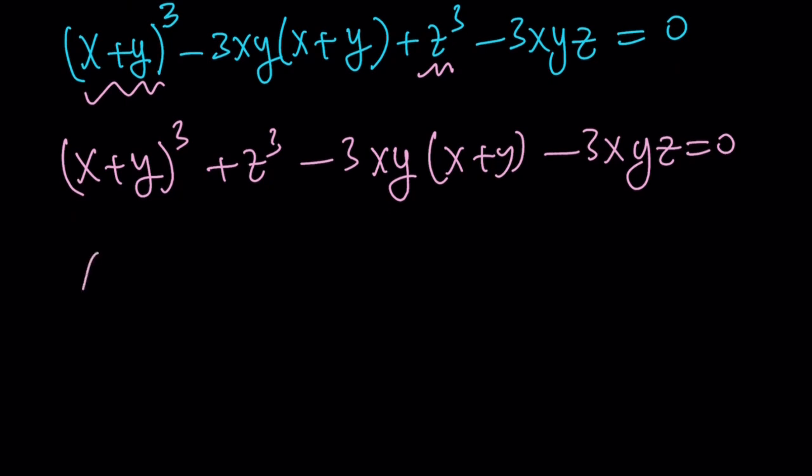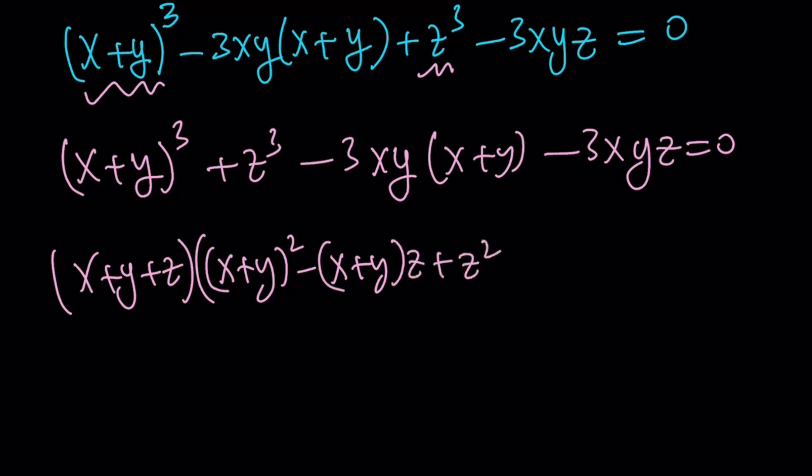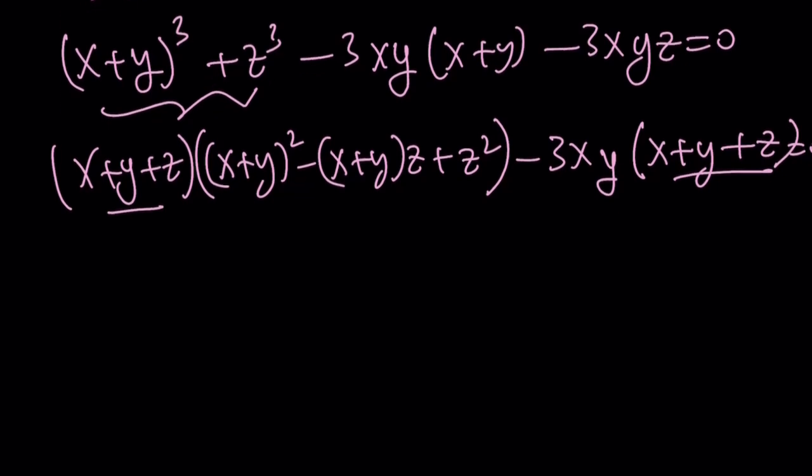Remember, a cubed plus b cubed. a plus b, right? Multiply by a squared minus ab plus b squared, which is z squared in this case. That is the first part. And then the rest, notice that negative 3xy is a common factor. And inside we have x plus y plus z, which is really cool because now I have the x plus y plus z in both of these expressions, which means I can factor out x plus y plus z.